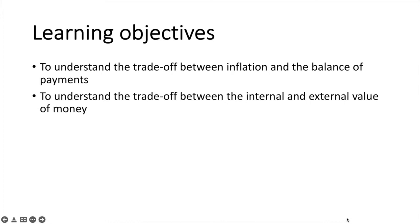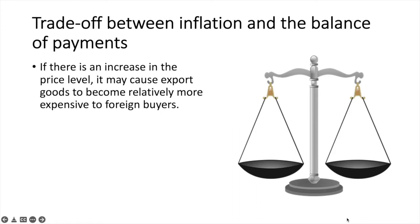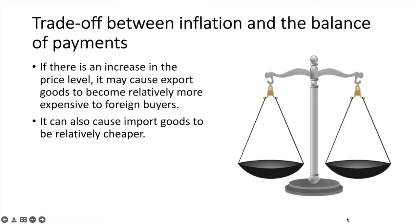To understand the trade-off between inflation and the balance of payments, let's look at what happens if there is an increase in the general price level. If there is an increase in the price level, it may cause export goods to become relatively more expensive to foreign buyers. It can also cause import goods to become relatively cheaper. The net effect will be a movement towards a trade deficit as imports rise and exports fall.